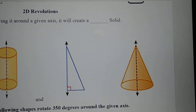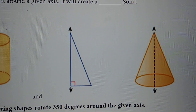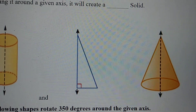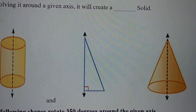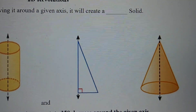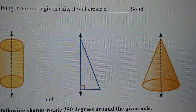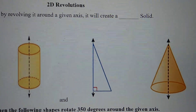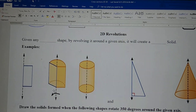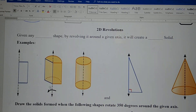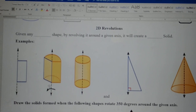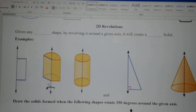We have another example here — we are now revolving a triangle, again around this vertical axis, and by revolving it, it creates a cone. So we can generate a lot of solid figures using revolutions. Not all solid figures are generated this way, but we can generate several.